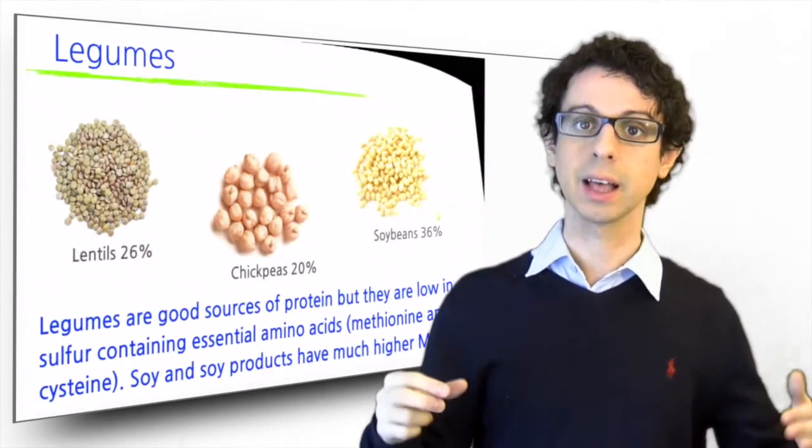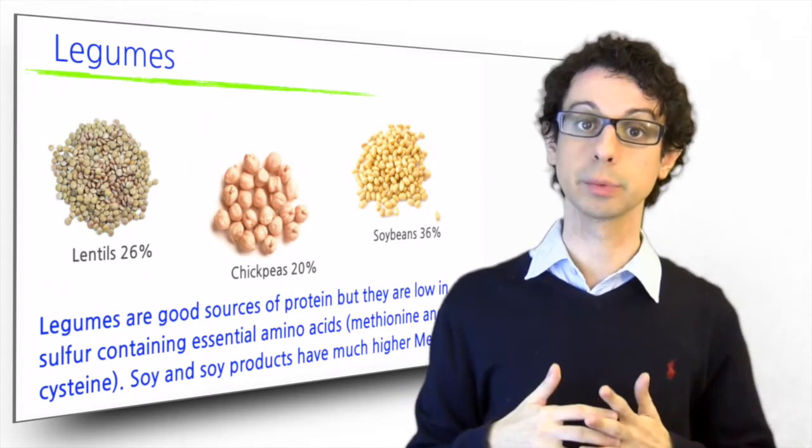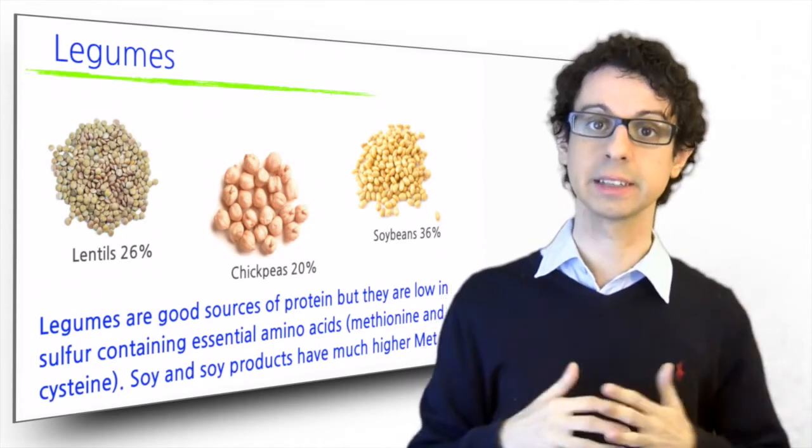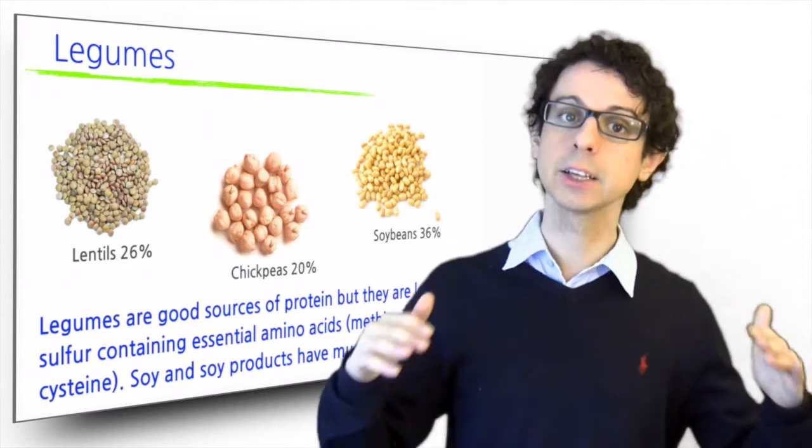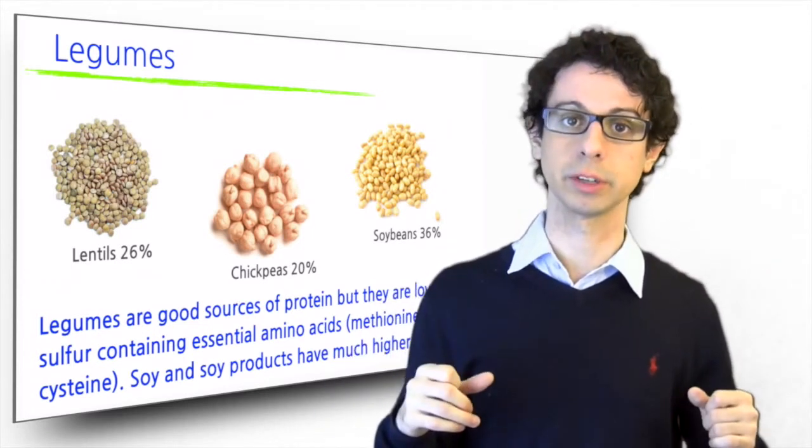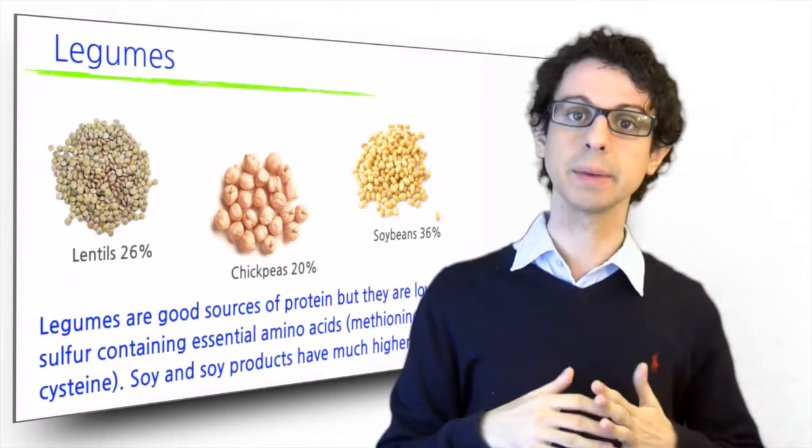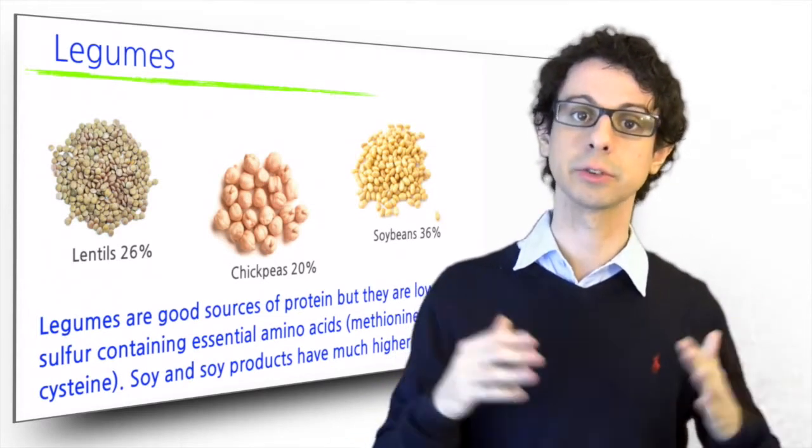And then we have legumes. Legumes also have a very good protein content, much higher than cereals, ranging between 20 and 26 percent. But legumes also have a problem of protein quality. The lacking amino acids this time are the sulfur containing ones.